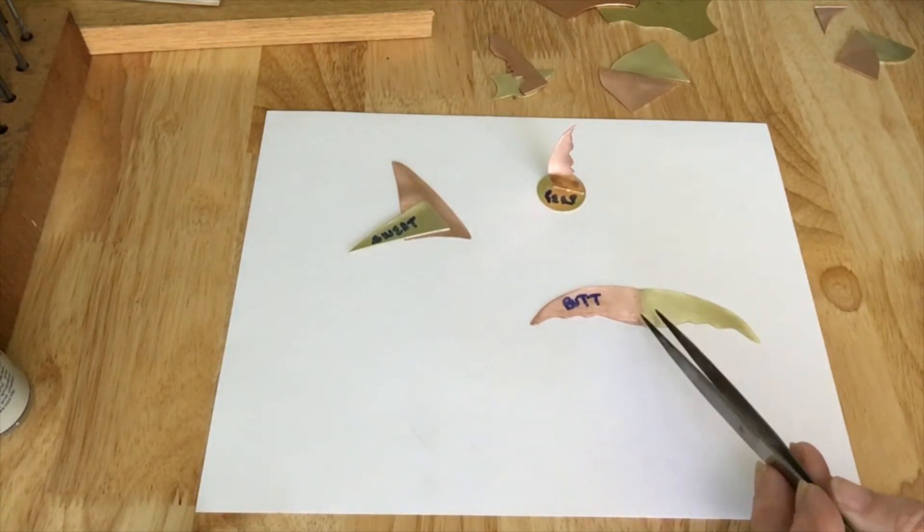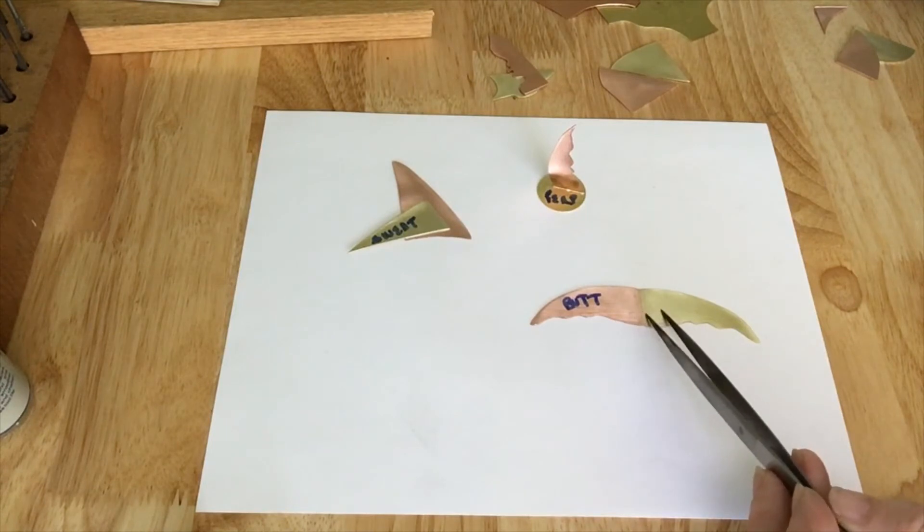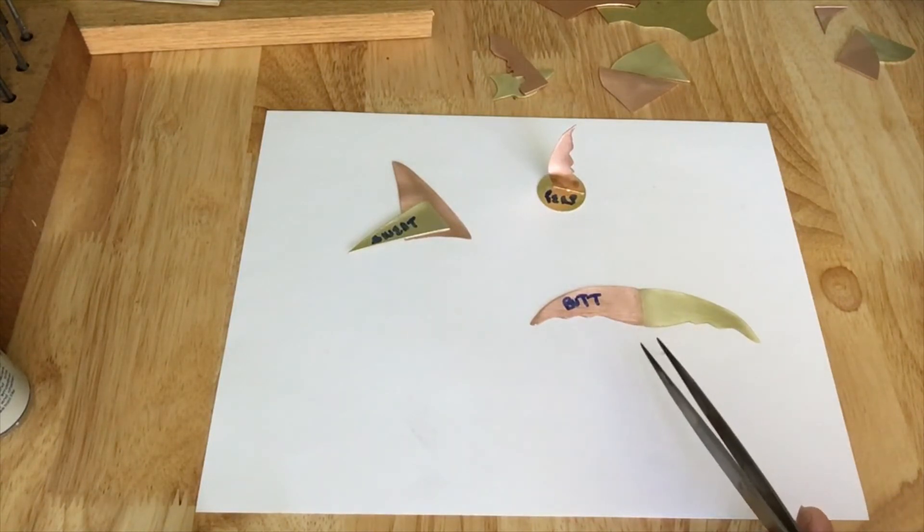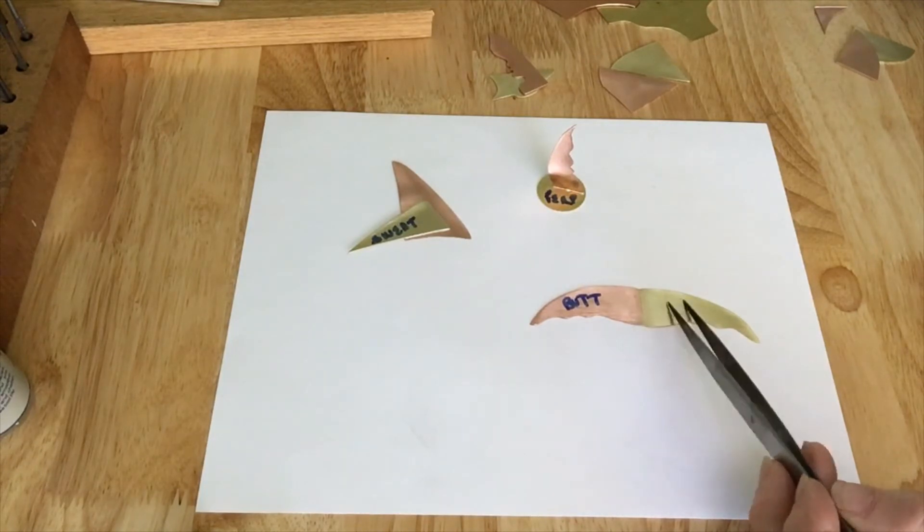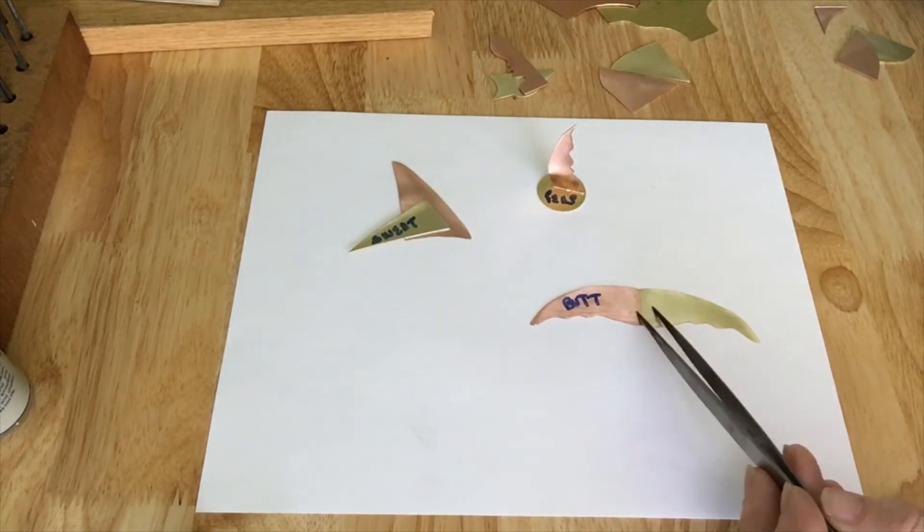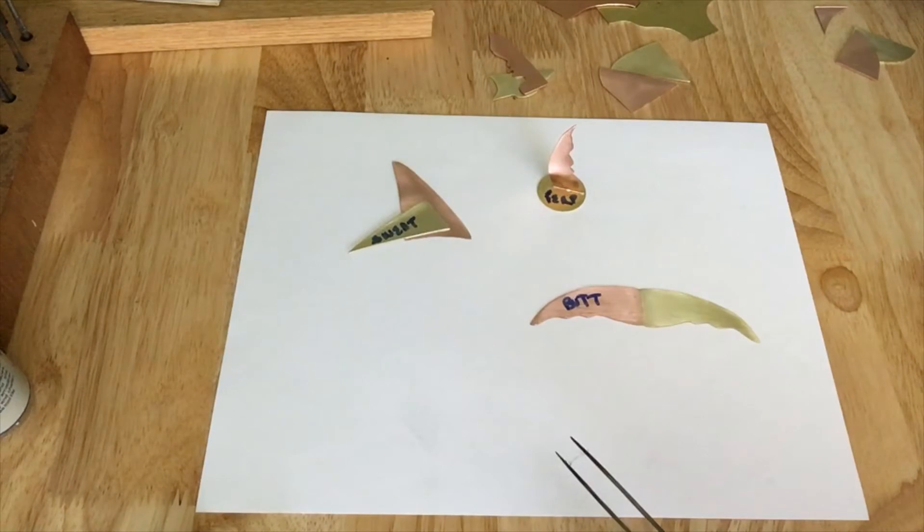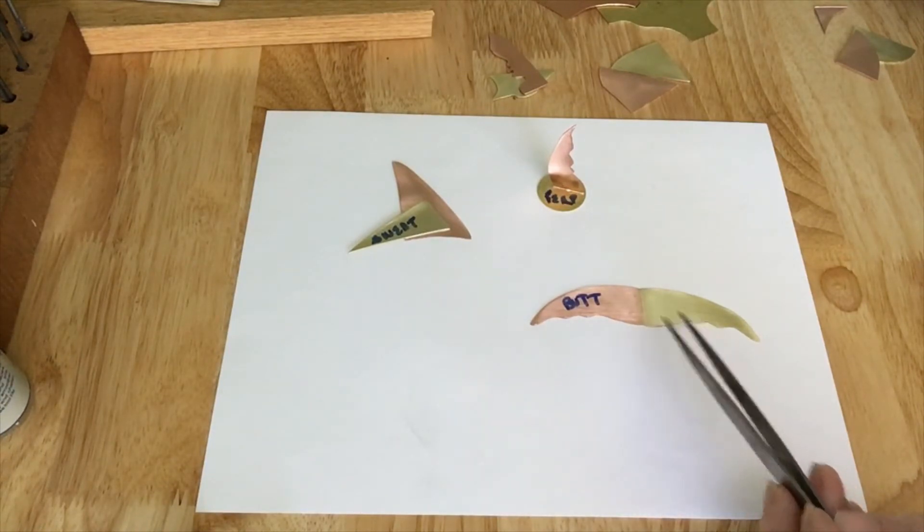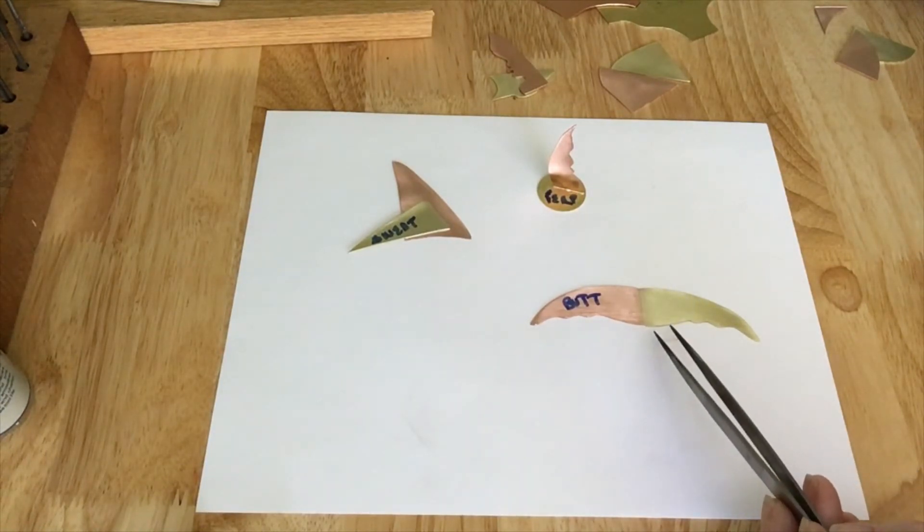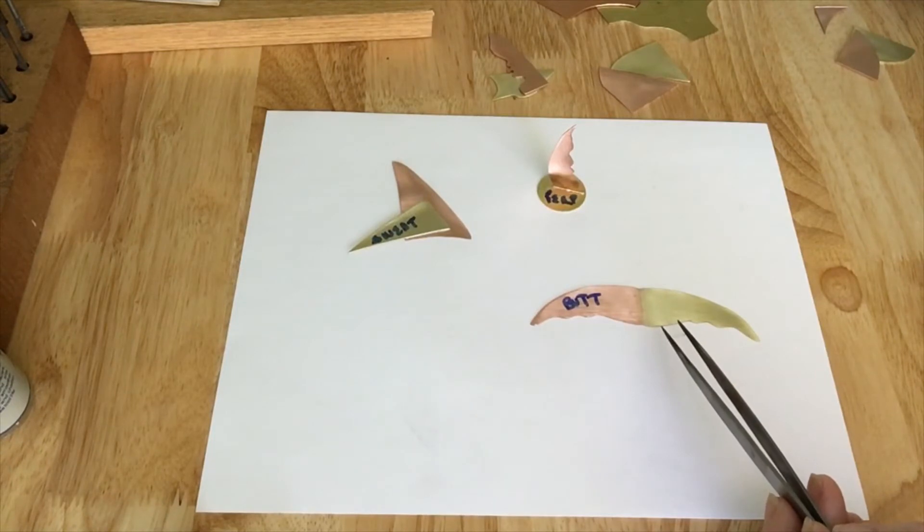Now for the butt joint, these two pieces must be the same gauge. Gauge is the thickness of the metal. I'll go over that in class. Otherwise, if they're not the same gauge, you'll have a ledge right here at that solder joint. So they must be the same gauge, and these two edges must fit together perfectly.